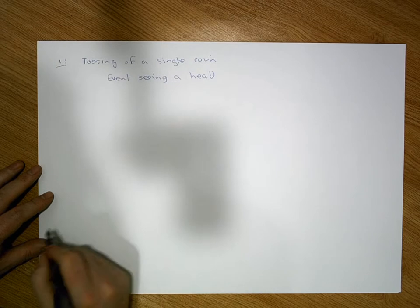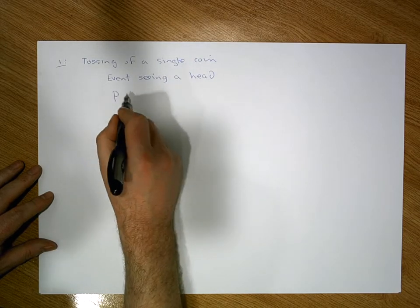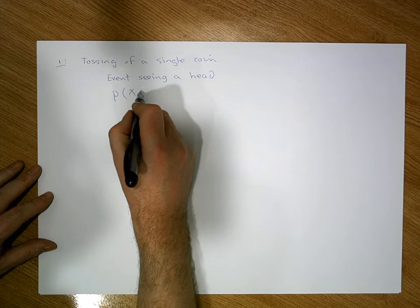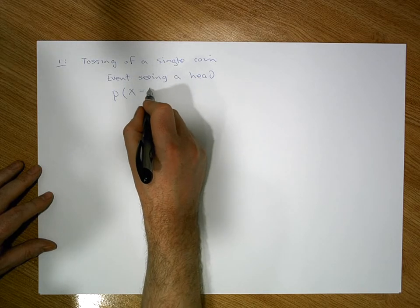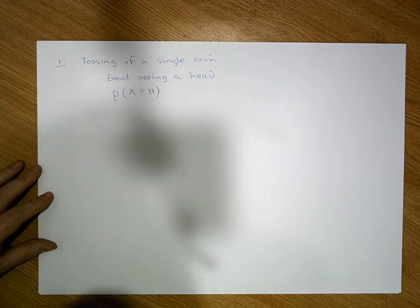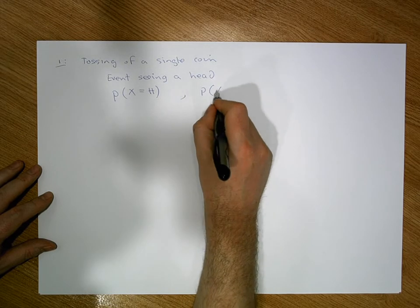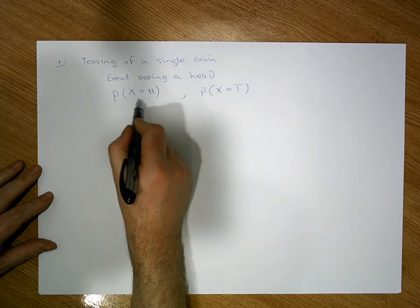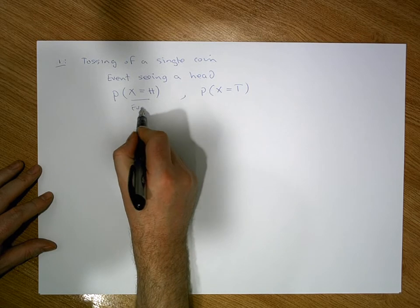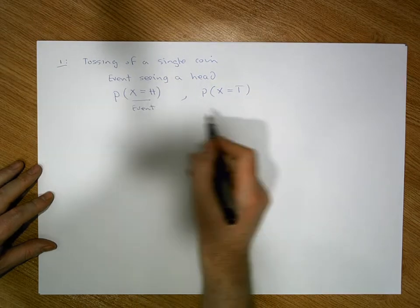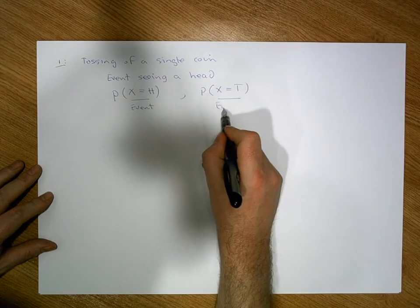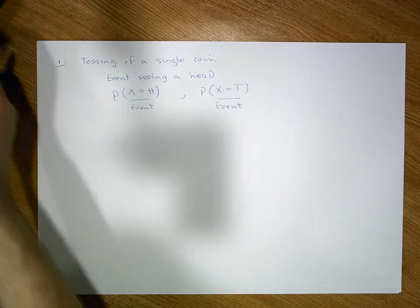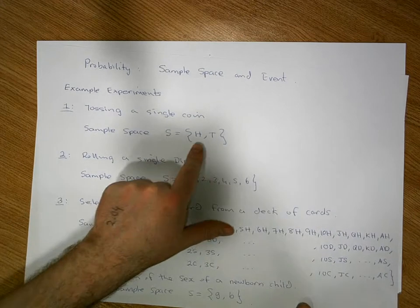If I symbolise that as a probability, I'm interested in what's the probability that when I toss a coin, the outcome achieved is H, a head. I could also ask what's the probability that when I toss a coin, the outcome I achieve is a tail. These are events — each is a subset of the sample space, contained within the sample space itself.